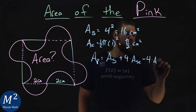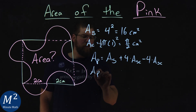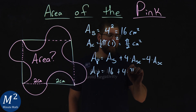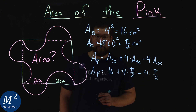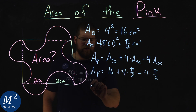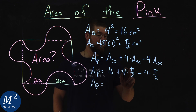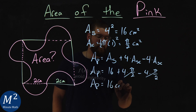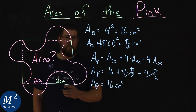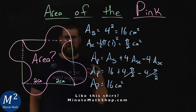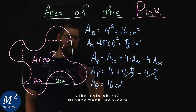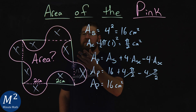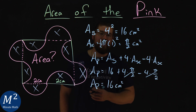Hopefully you can see the quick trick right there. The area of the pink region is going to be 16 plus four times pi over two, minus four times pi over two. These cancel each other out, and we're left with just 16 centimeters squared, which is also equal to what the area of the square was. By doing it this way, we can really see the quick method: each outside semicircle negates the corresponding inside one, and what we're left with is just the area of the square — 16 centimeters squared.